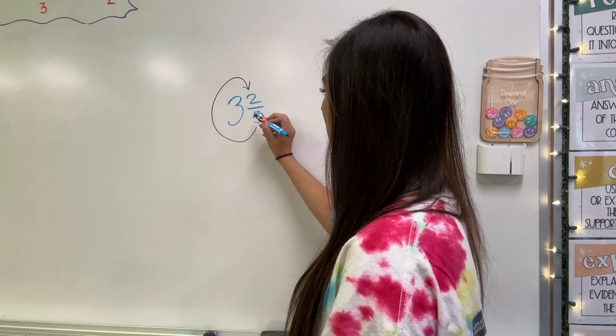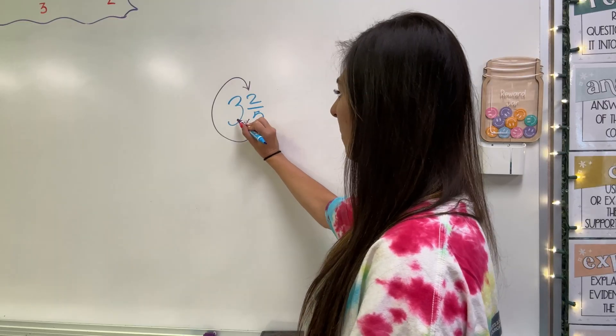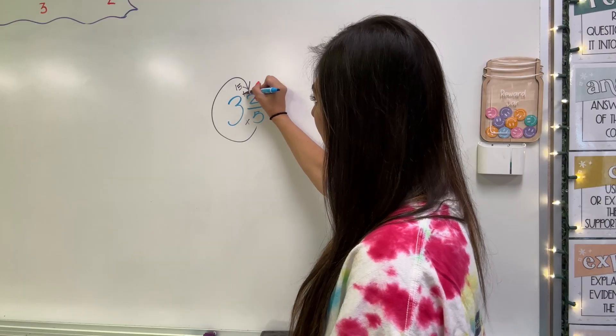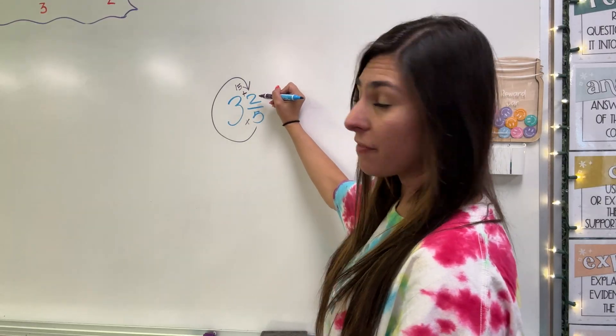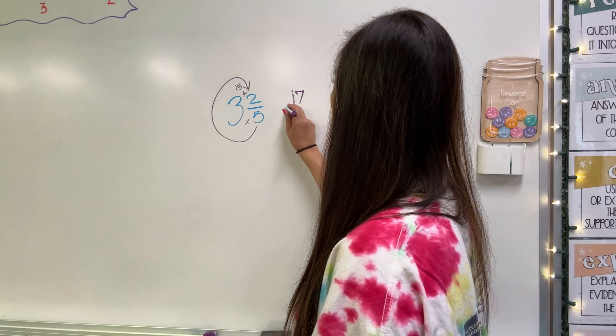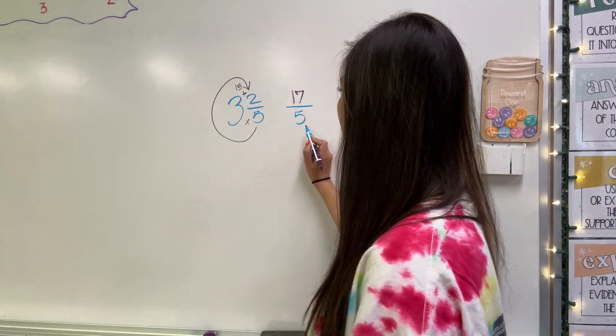So I'm going to start at the bottom and I'm going to reverse C up to the top. Now, when we do that, I'm going to multiply my denominator, my whole number. That gives me 15. Then I'm going to add the leftover two. So 15 plus two, that's going to give me 17. And then I keep my same denominator at five.